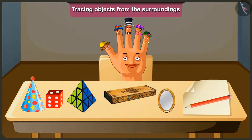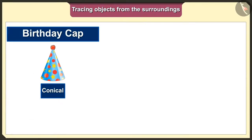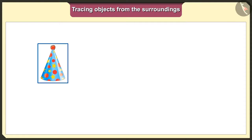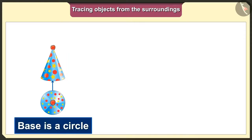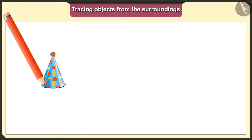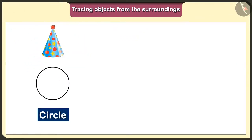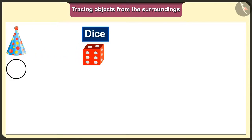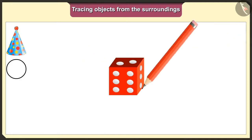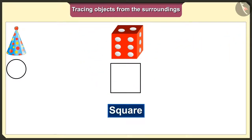First of all, we will put this conical shaped birthday cap on a paper and trace it. Look, the base of this birthday cap is a circle. So, we will get a circle shape when we trace its base. Now, we will trace the dice. This dice's base is a square. So, we will get a square shape when we put it on paper and trace it.